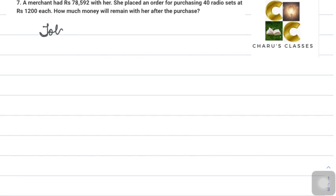Total money with merchant equals Rs 78,592. She placed an order for purchasing 40 radio sets at Rs 1,200 each. So each has a cost of Rs 1,200. If she takes 40, the cost of 40 radio sets...